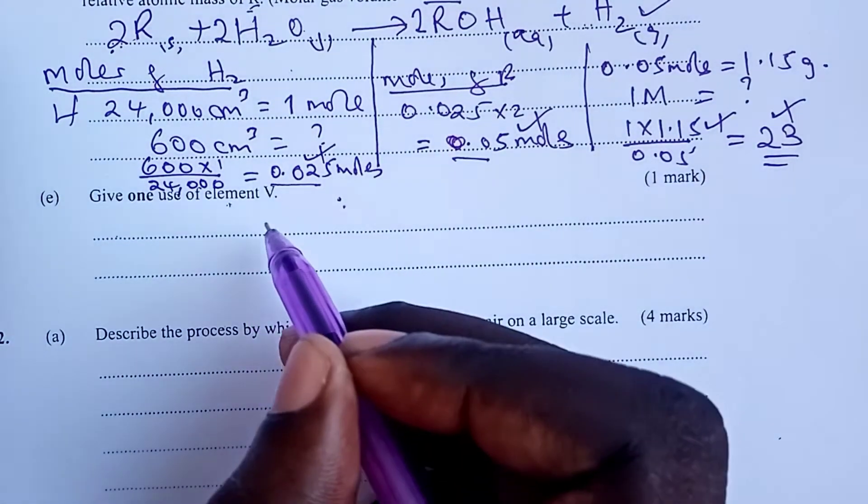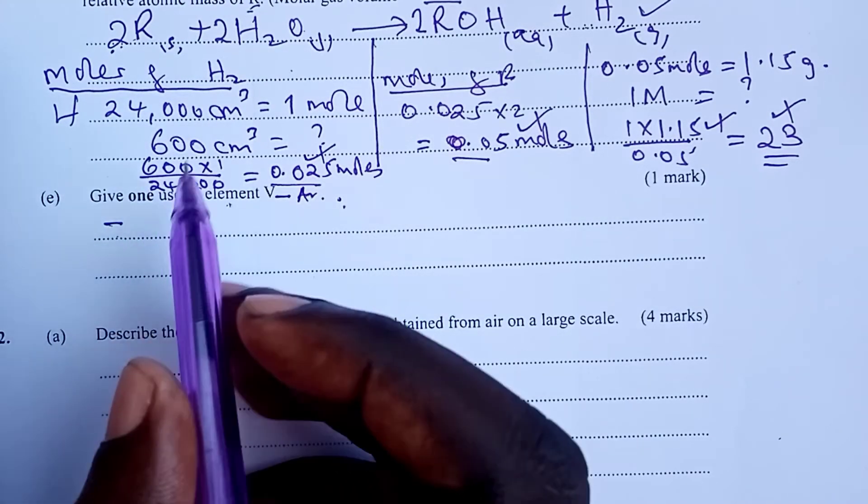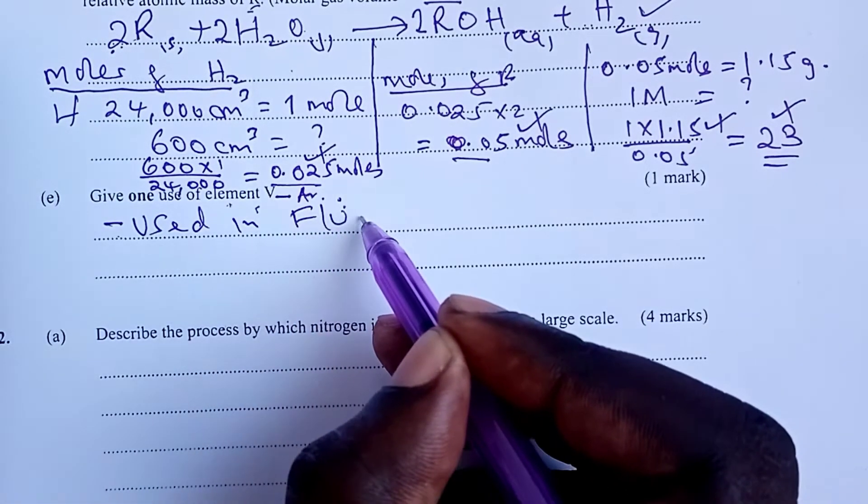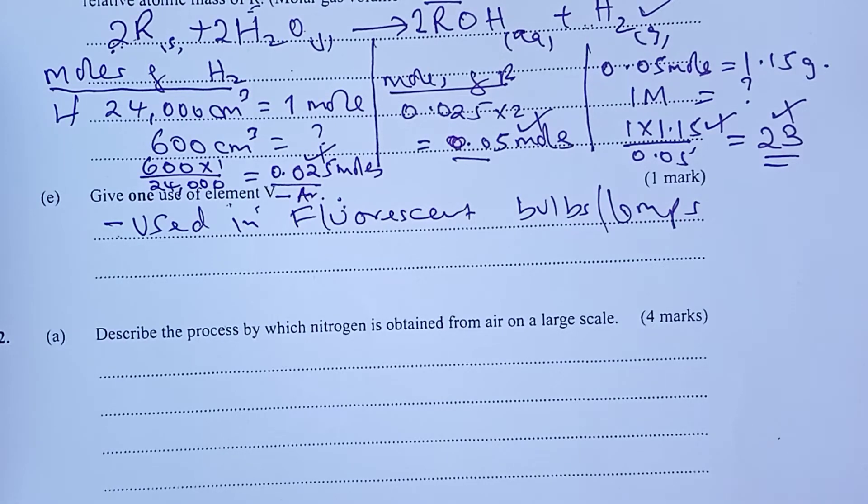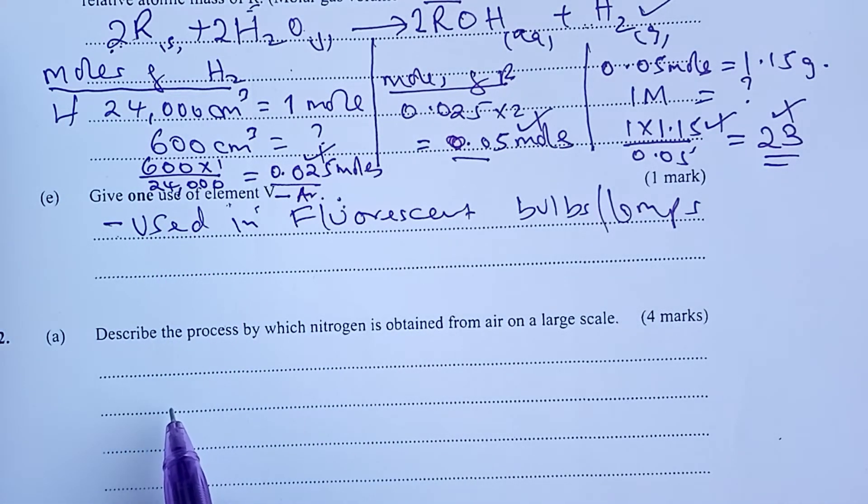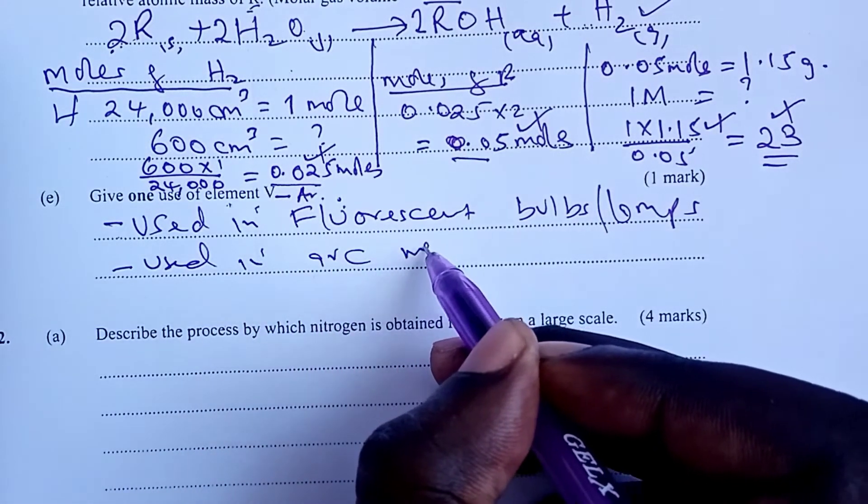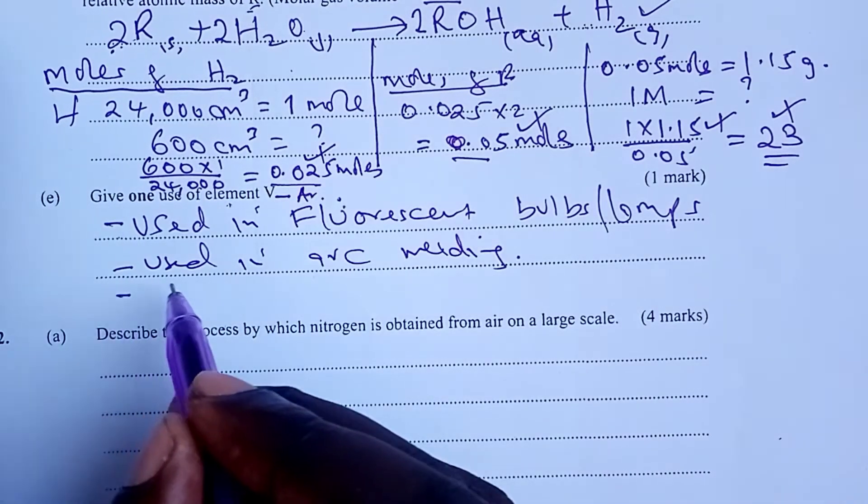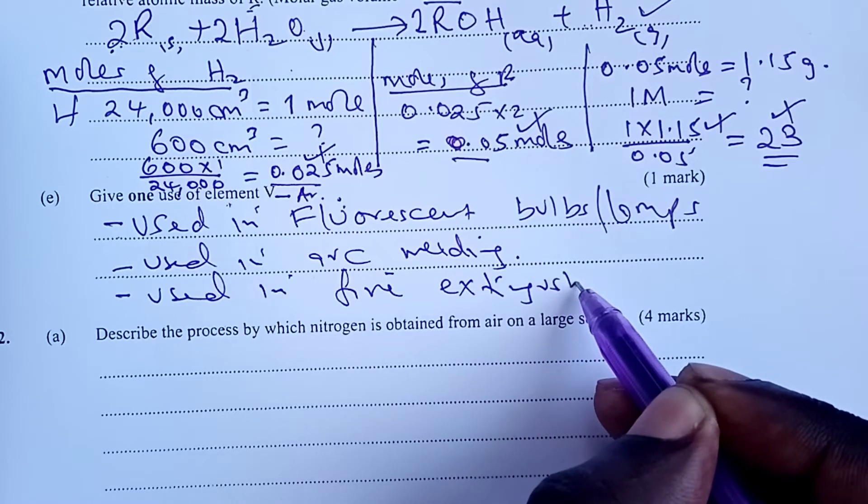Give one use of element V. Element V is our noble gas, argon. Argon has several uses. You can talk of used in fluorescent bulbs or lamps. Please, when we say in, we are not committing ourselves wrongly. I have had students who write this as used in the manufacture of fluorescent bulbs. If you wrote that, you are wrong. So when you are writing uses, please let's be very careful to avoid wrong commitment. Argon can also be used in arc welding. This one is self-explanatory. And because it is inert, we can also use it in fire extinguishing. You are asked only one, so you choose any of those three.